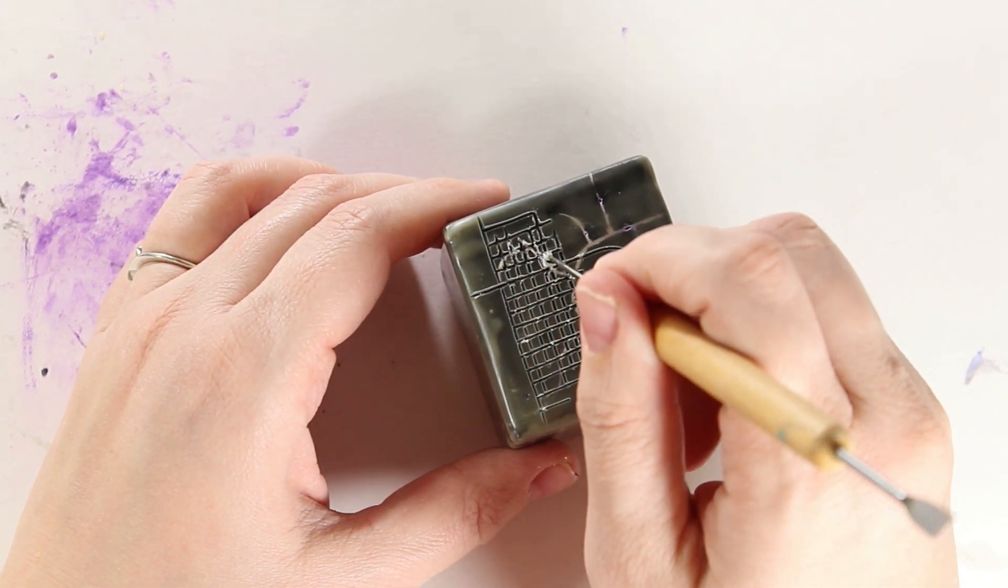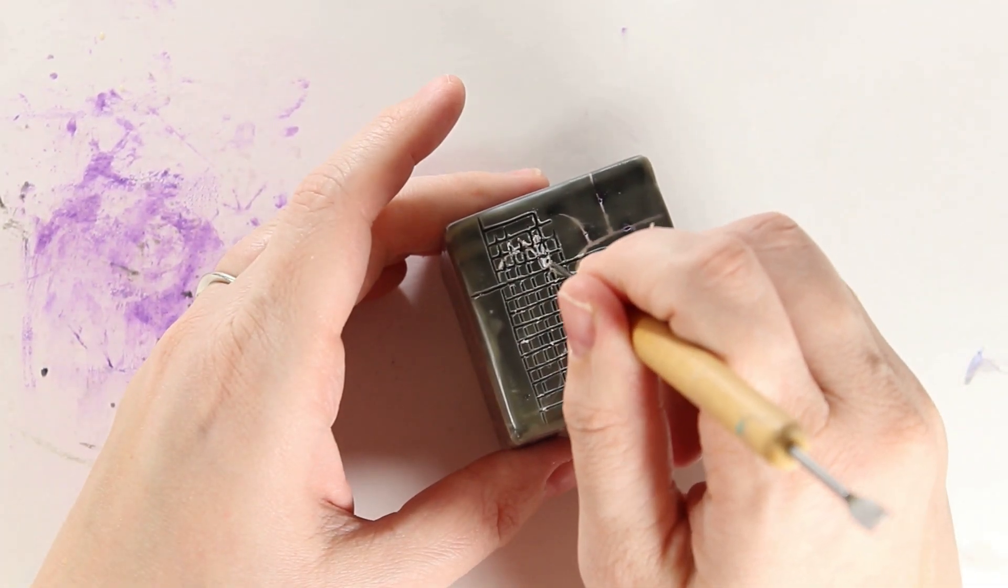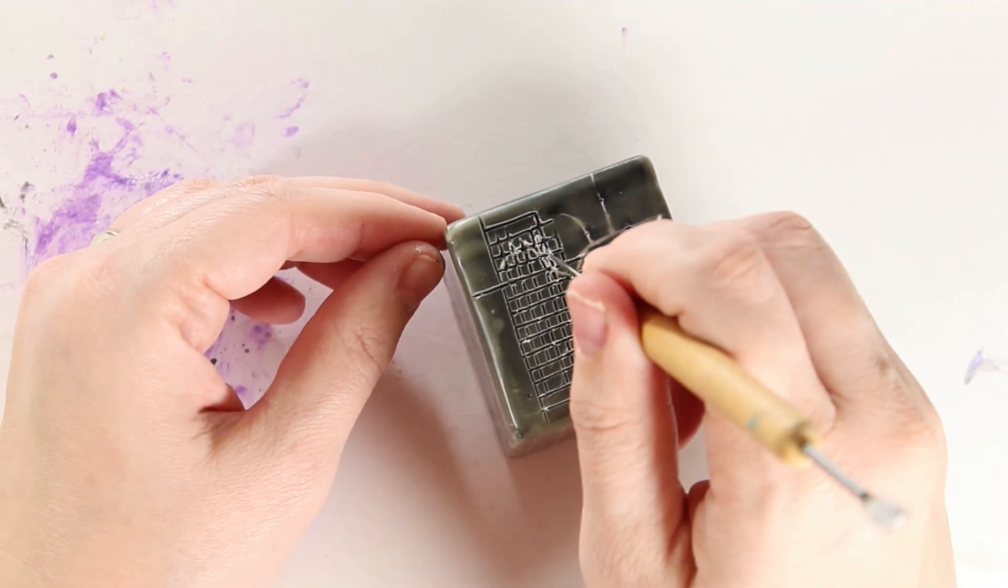Here you can see how I'm really carving around each square in that grid just to make sure that there's no wax residue getting in the way of those fine details.